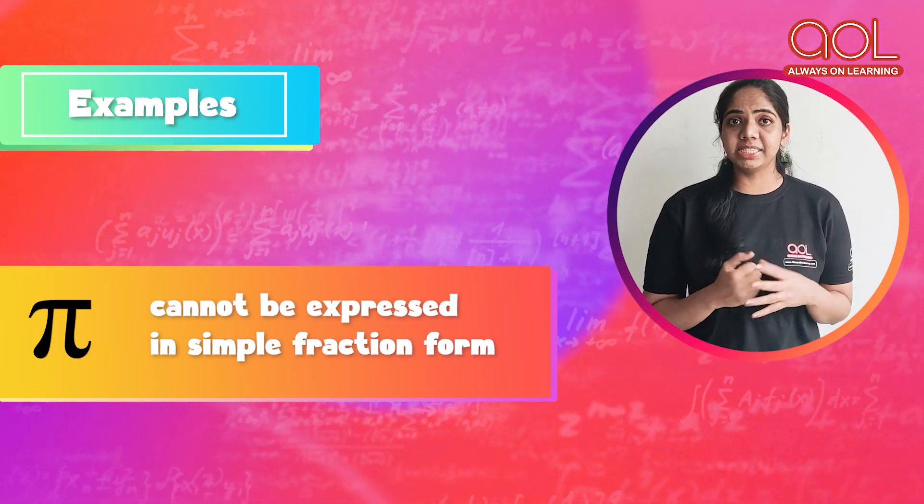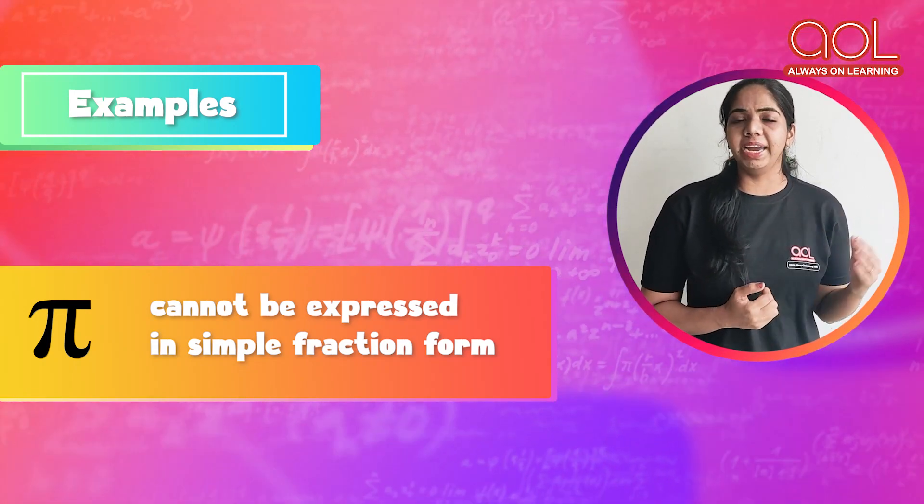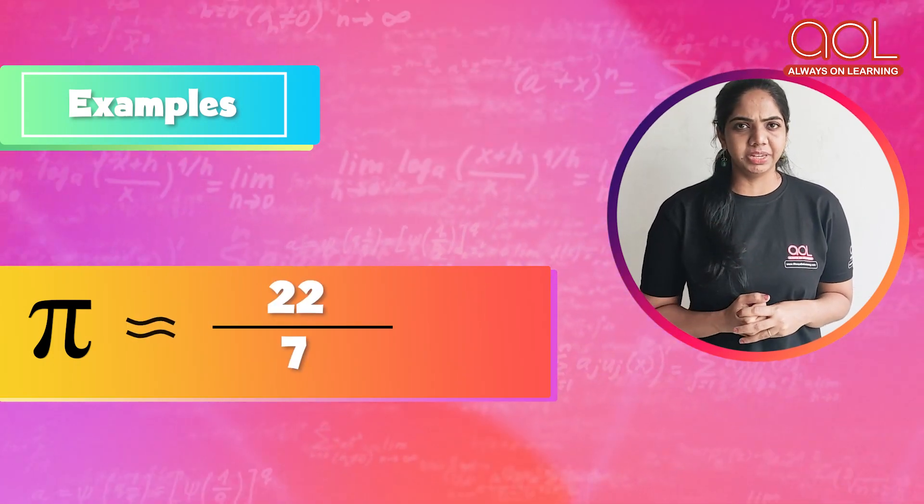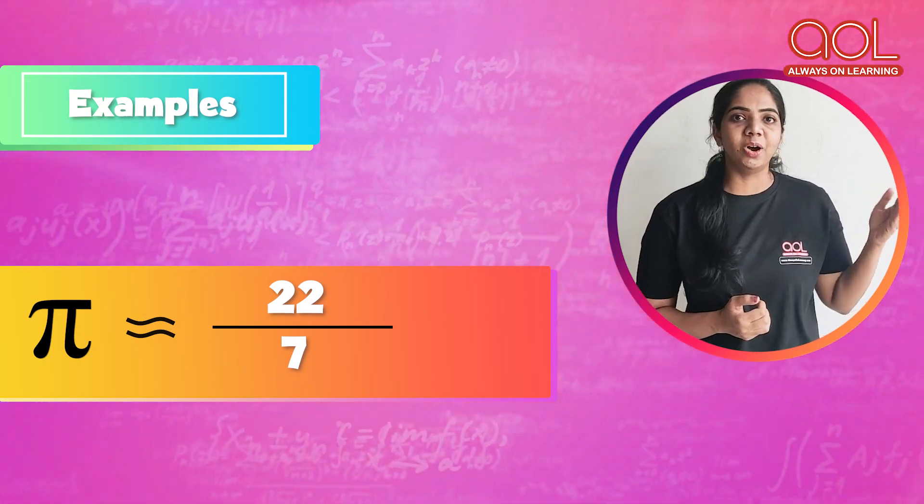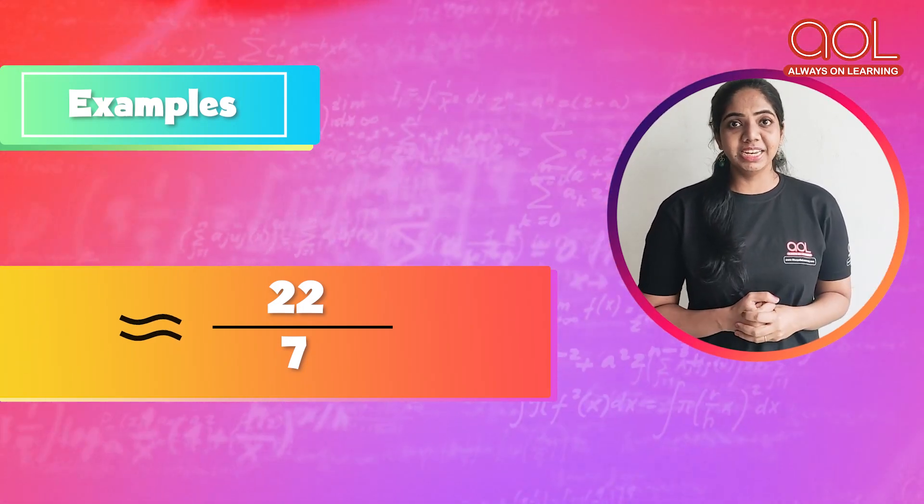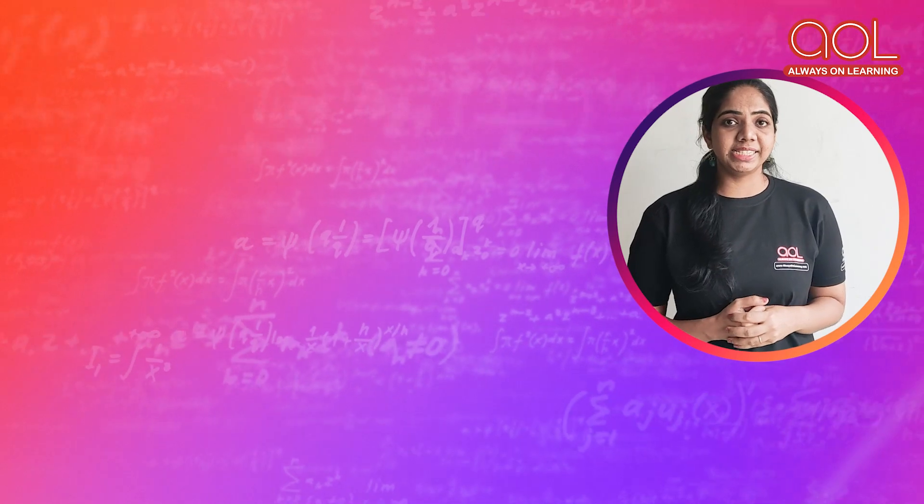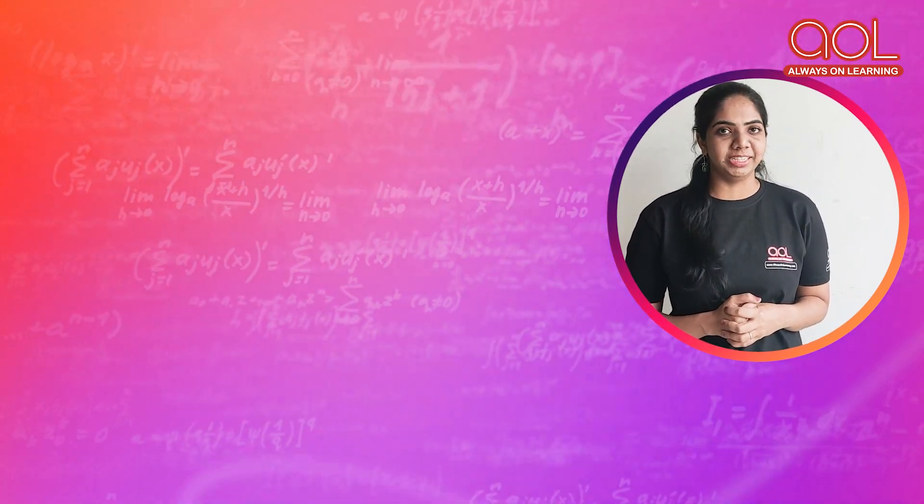We have estimated the value of pi as 22 by 7. It is close but not accurate. 22 by 7 will not give you the same value. This was an example of an irrational number.